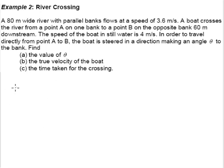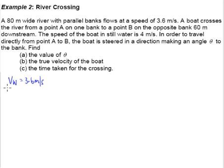The first step is to always get the information we need. The river is flowing at 3.6 meters per second, so VW equals 3.6 meters per second. Write that down so you can easily retrieve it later. The speed of the boat in still water is 4 meters per second - this is the speed of the boat relative to the water, so VBW equals 4 meters per second. Bear in mind that this is also the steering.